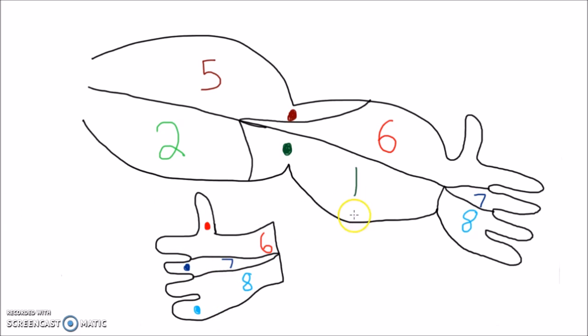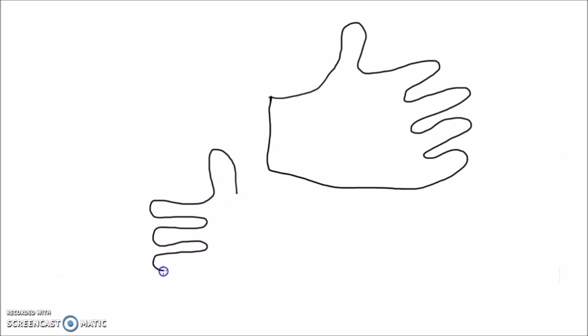It should be noted that the actual nerves that supply the hand have more of a funky distribution as compared with the straightforward nature of the dermatomes.